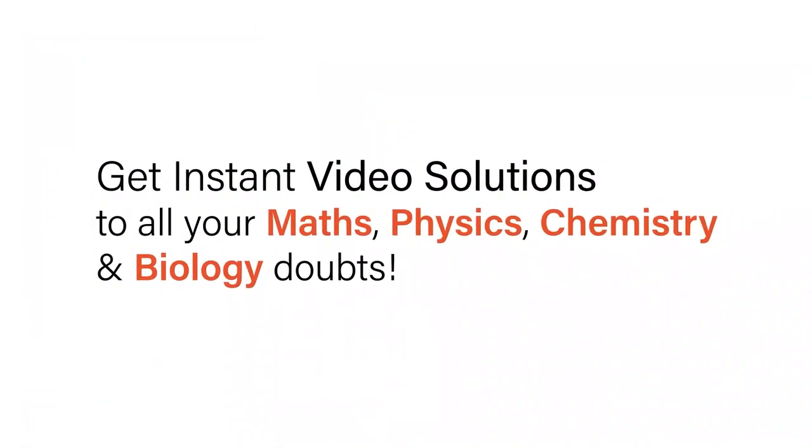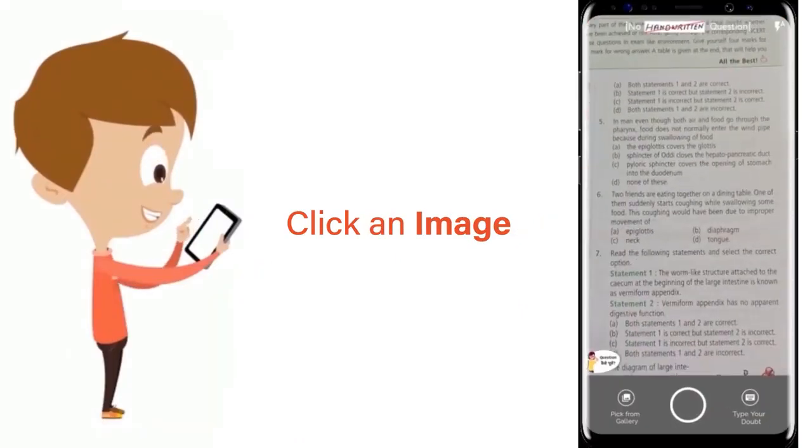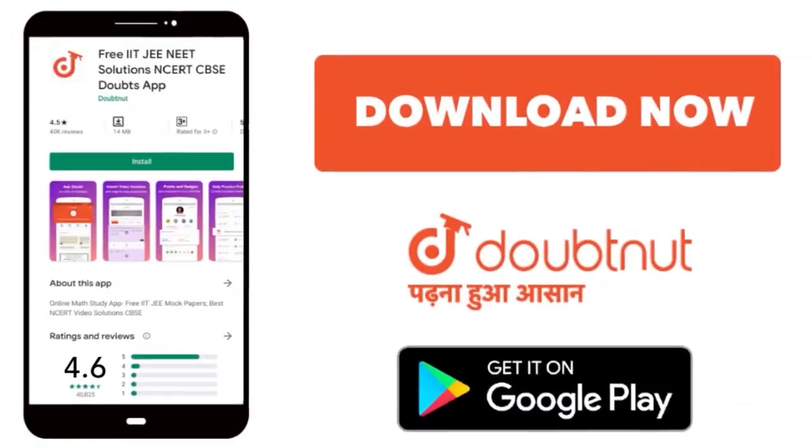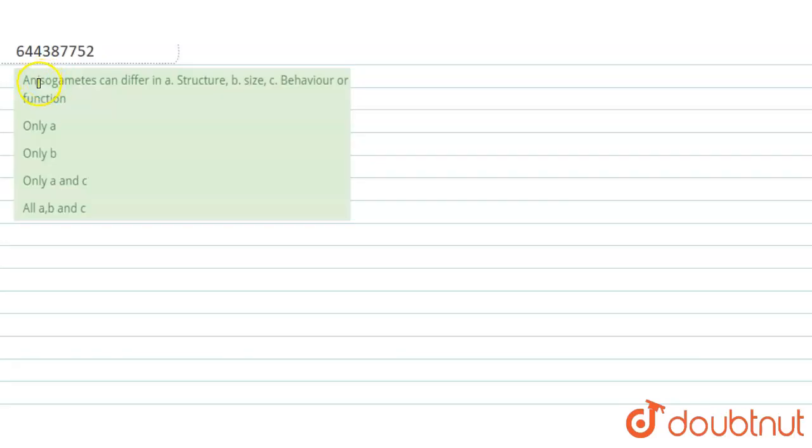With Doubtnet, get instant video solutions to all your maths, physics, chemistry, and biology doubts. Just click the image of the question, crop the question, and get instant video solution. Download Doubtnet app today. So here the question says that anisogametes can differ in.